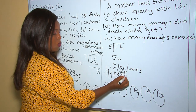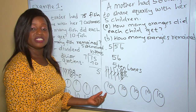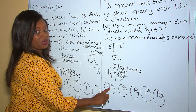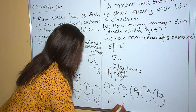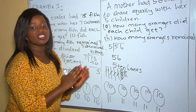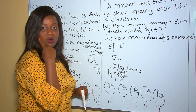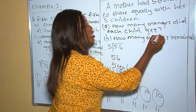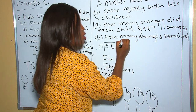The first child gets the first one, and sharing continues until one orange has remained. Remember, they were supposed to share equally and one has remained. Each child got one ten and one unit — that is 11. Therefore, each child got 11 oranges and the mother remained with 1 orange. Each child got 11 oranges, and how many oranges remained? One orange remained.